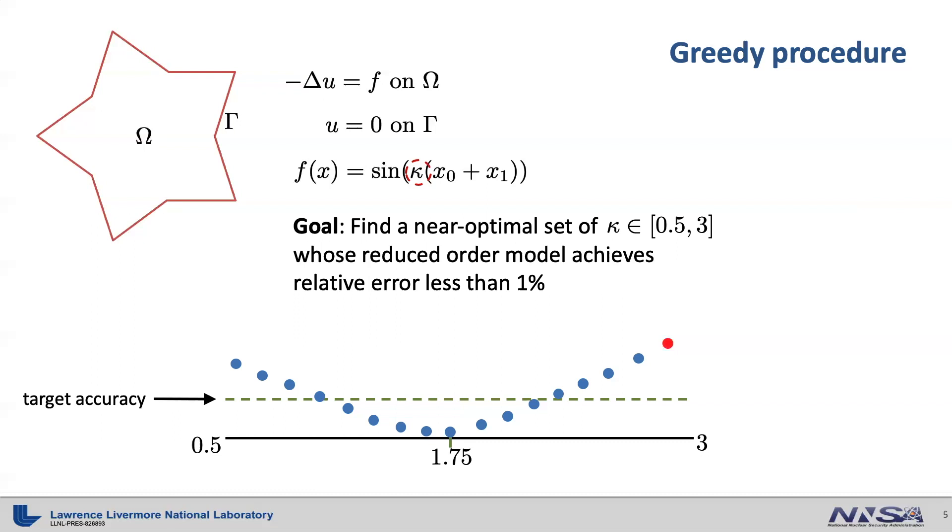The greedy algorithm will find where the maximum relative error occurs, which is depicted as a red point here, then update the relative errors for the current reduced order model. The accuracy around 2.99 is significantly improved due to the addition of the simulation data there.